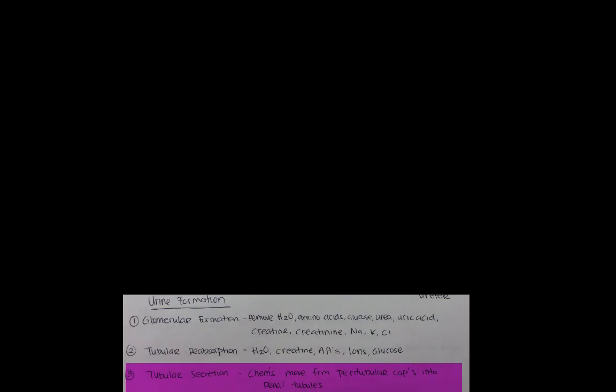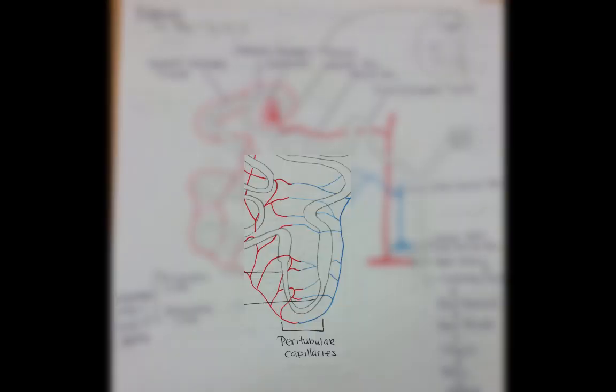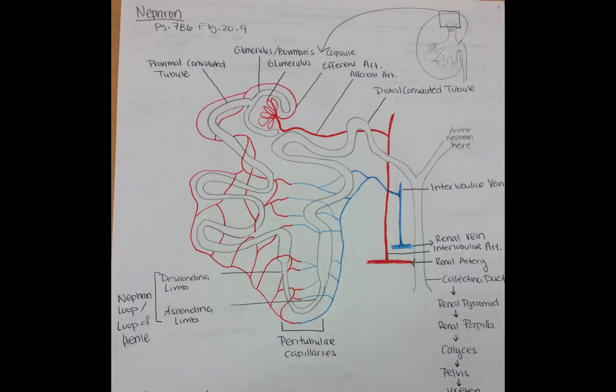Step three is tubular secretion. Once all those useful things go back to your blood and are no longer in your urine, your blood decides maybe it doesn't need some of them after all. So then some of the chemicals go back into the urine again — some chemicals will move from the peritubular capillary network back into the urine in the renal tubules.